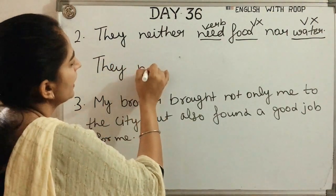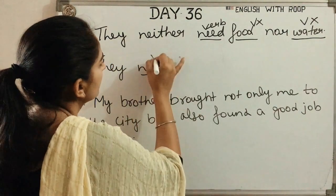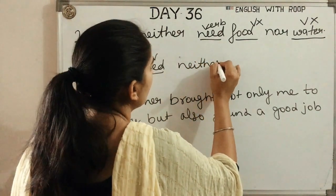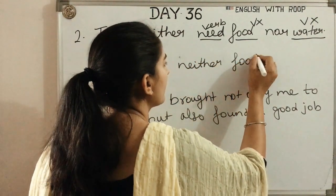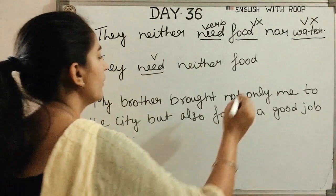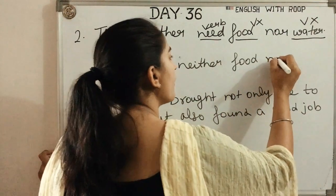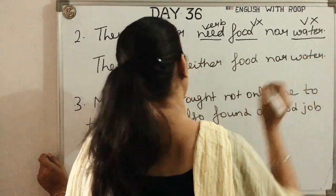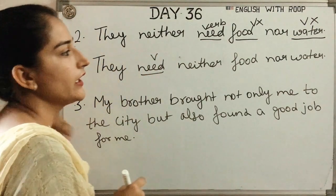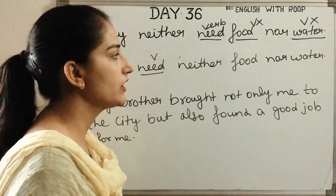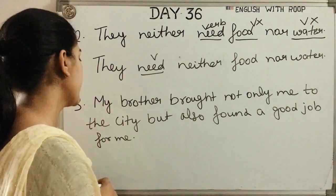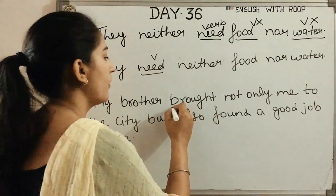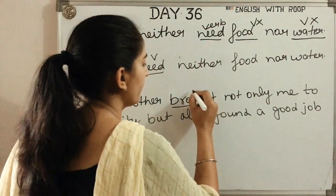The first rule: same parts of speech. The two things we connect with not only...but also, either/or, or neither/nor must be the same part of speech — both nouns, both verbs, or both adjectives. This is very obvious and important.